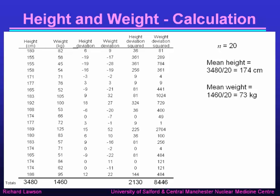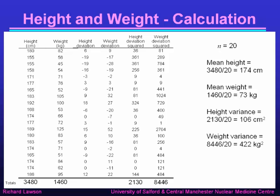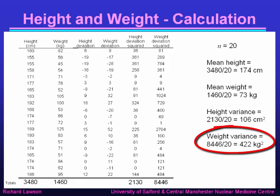The next step in calculating the variance is to square these deviations. The height deviation of 6 squared gives 36, and the weight deviation of 9 squared gives 81, and so on. The total squared deviation for heights comes to 2130, and for weights comes to 8,446. The variance is the mean of the squared deviations: for height it's 2130 ÷ 20 = 106 cm², and for weight it's 8,446 � 20 = 422 kg².